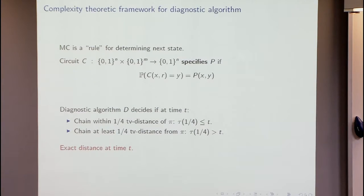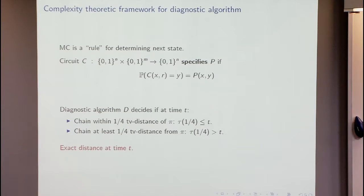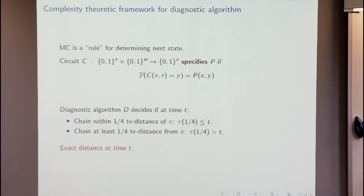A Markov chain will be a rule for determining the next state given the current state, which is a 0-1 string of length n, plus some randomness. A circuit of this type specifies the transition matrix P if the probability that the circuit outputs state Y given X and the randomness equals the transition probability. A diagnostic algorithm should have access to this circuit for simulating the chain, run it for some time t, then decide: is the chain within one-quarter total variation distance from pi, or still at least one-quarter away?